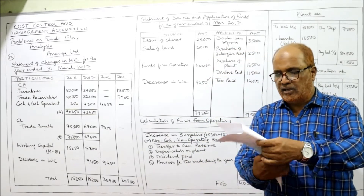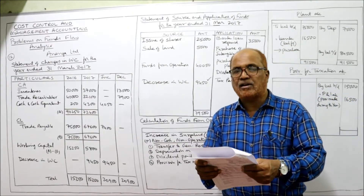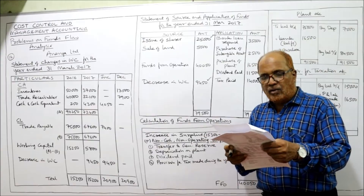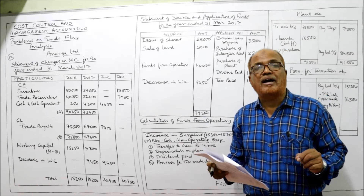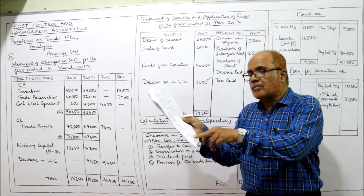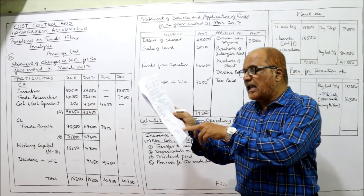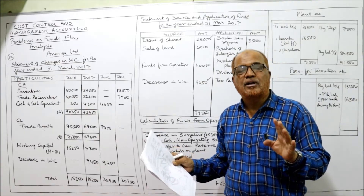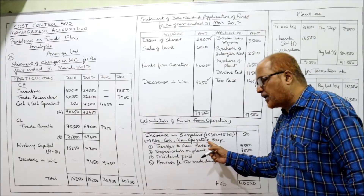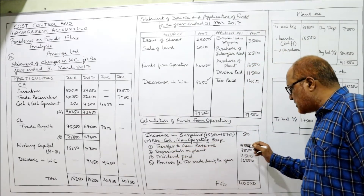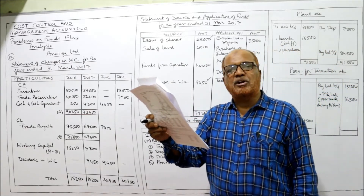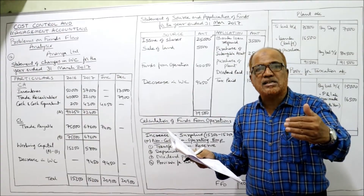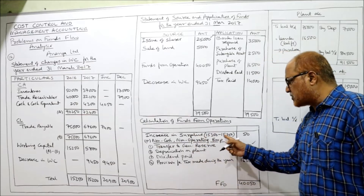Now the other items: share capital last year 1 lakh, current year 1 lakh 25,000 — so shares issued of 25,000 taken on the source side. Reserves and surplus is used to find funds from operation. Note number 1 gives: general reserve — last year 25,000, current year 30,000 — so 5,000 transferred to general reserve, taken as a non-cash non-operating item. Surplus as per statement of profit and loss: last year 15,250, current year 15,300 — increase in surplus by 50 rupees.